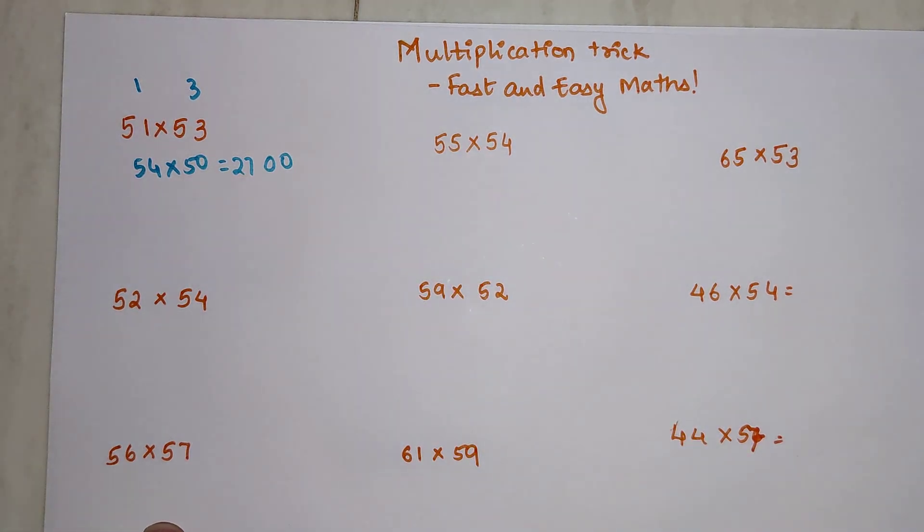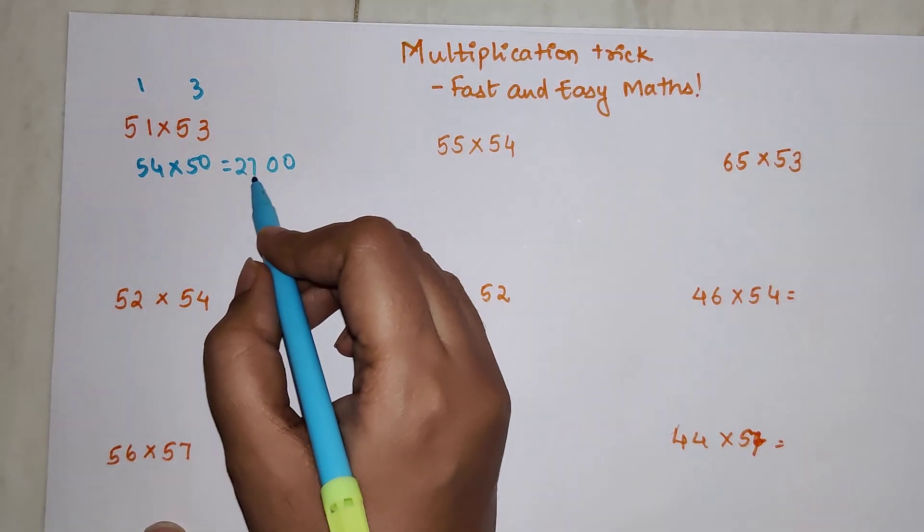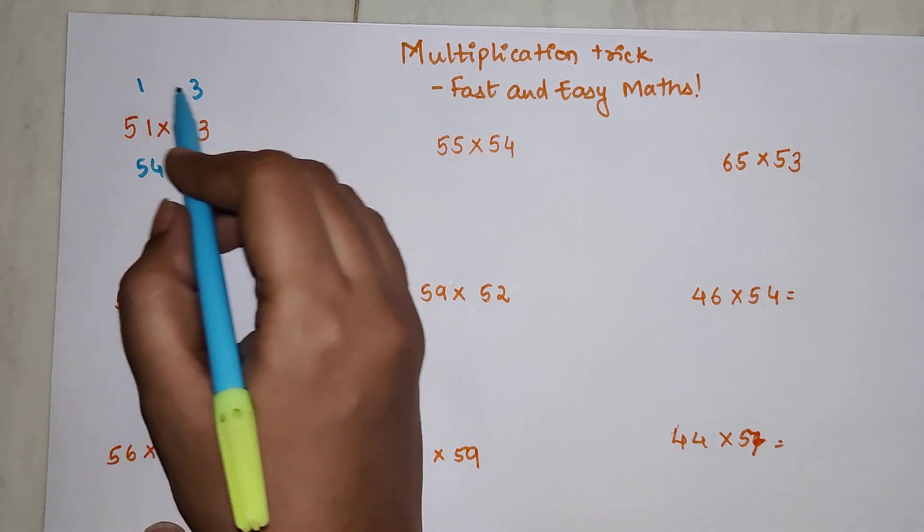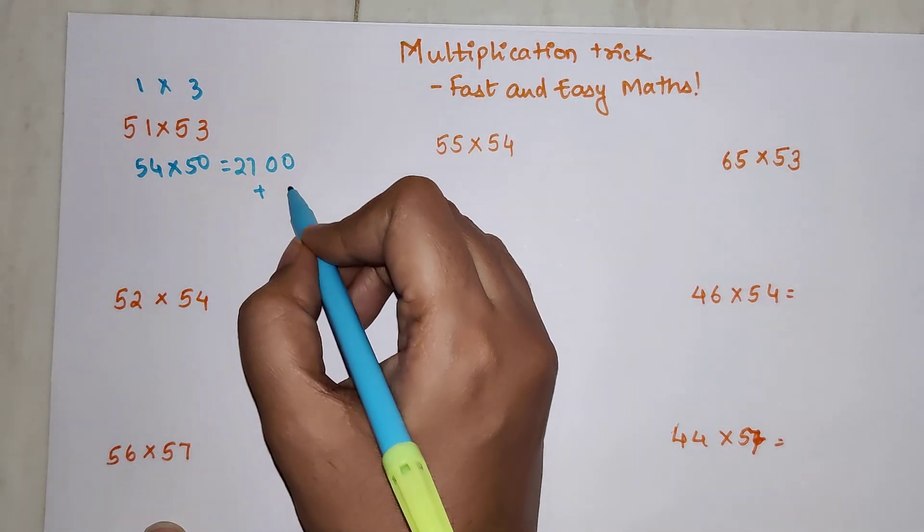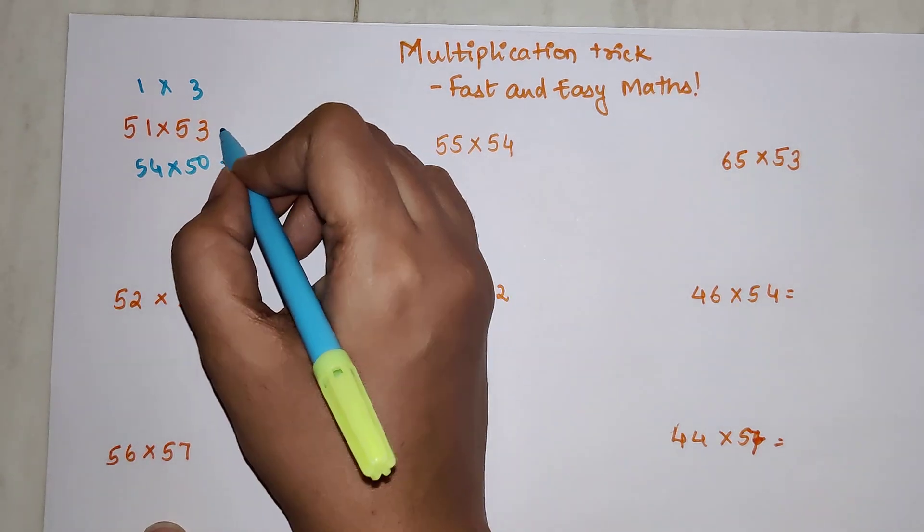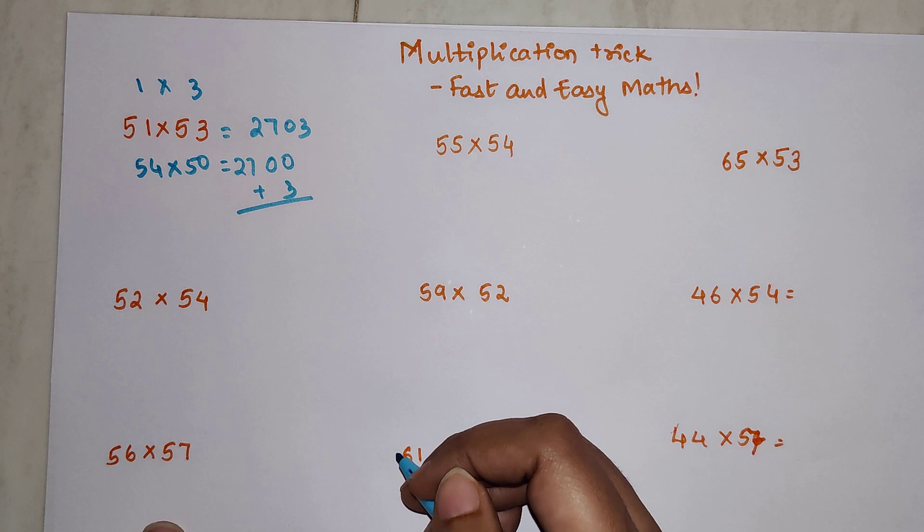Your answer now becomes 2700. For your final answer, you add the product of the differences. So 1 times 3 gets you 3, making your final answer 2703.